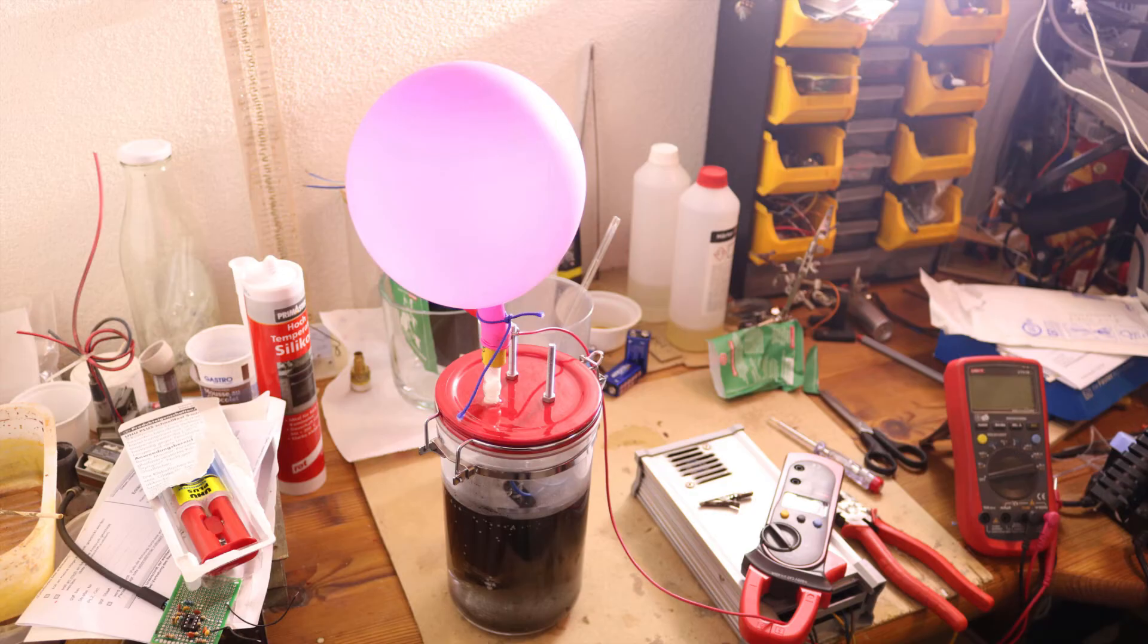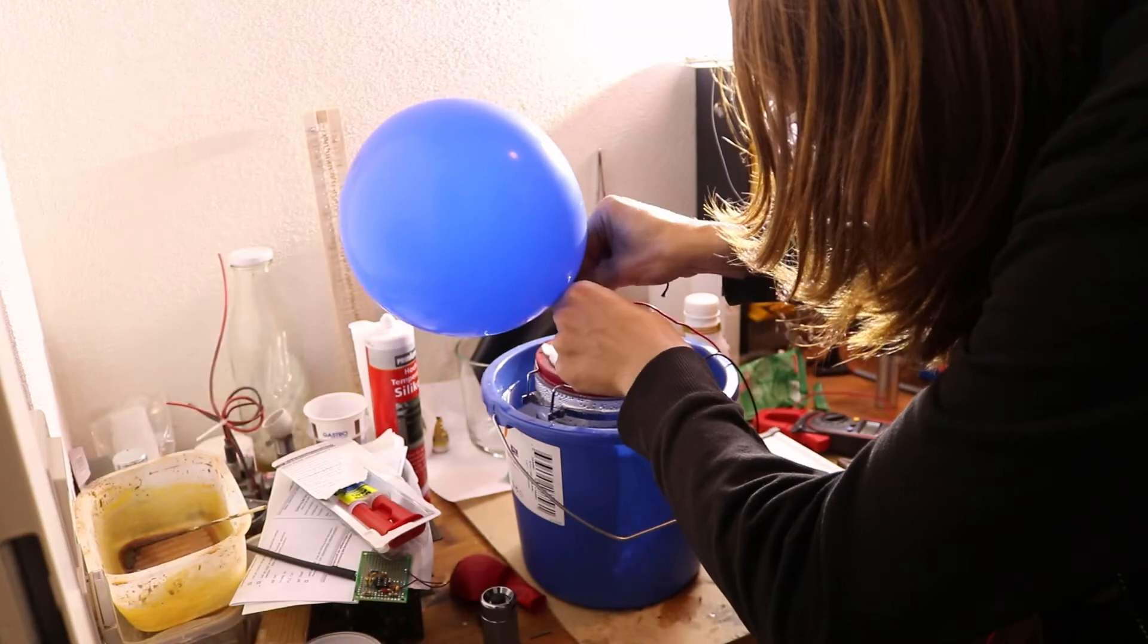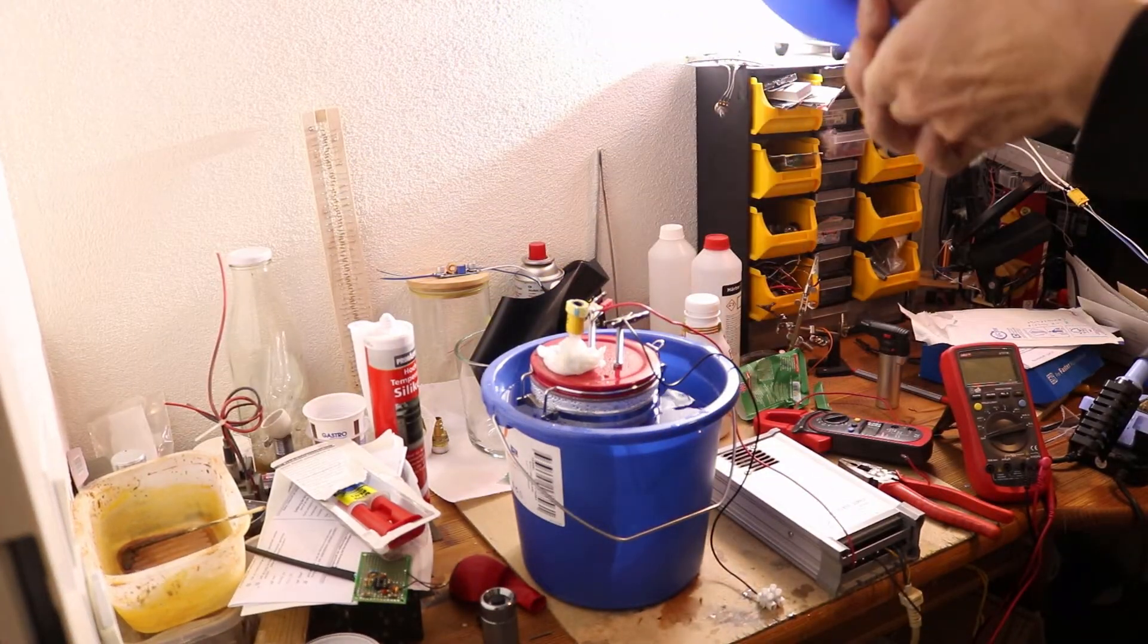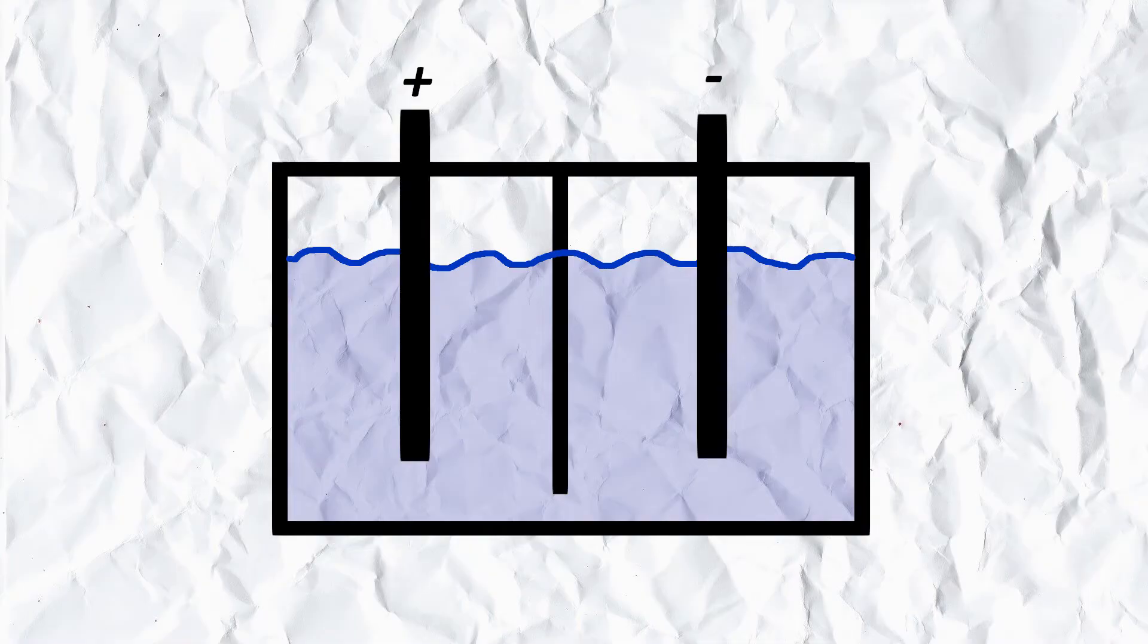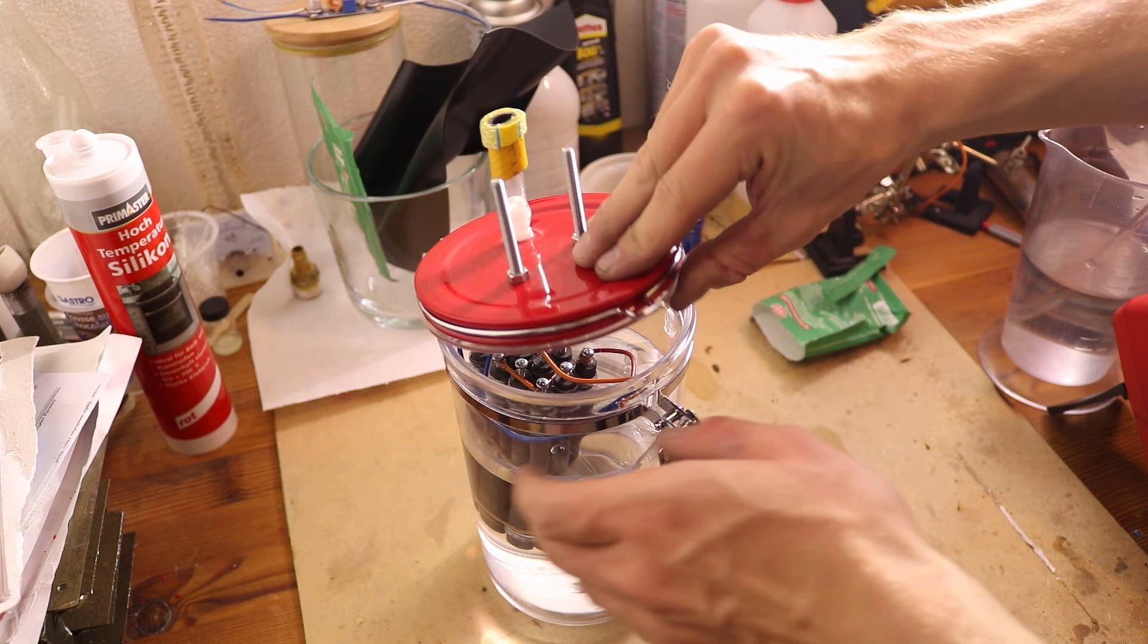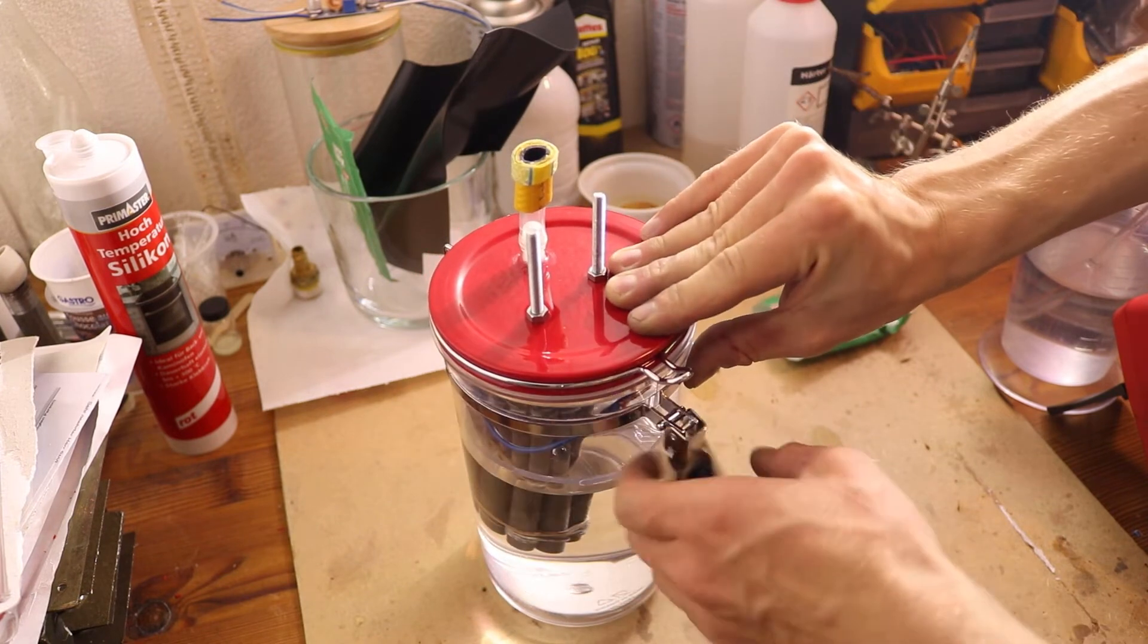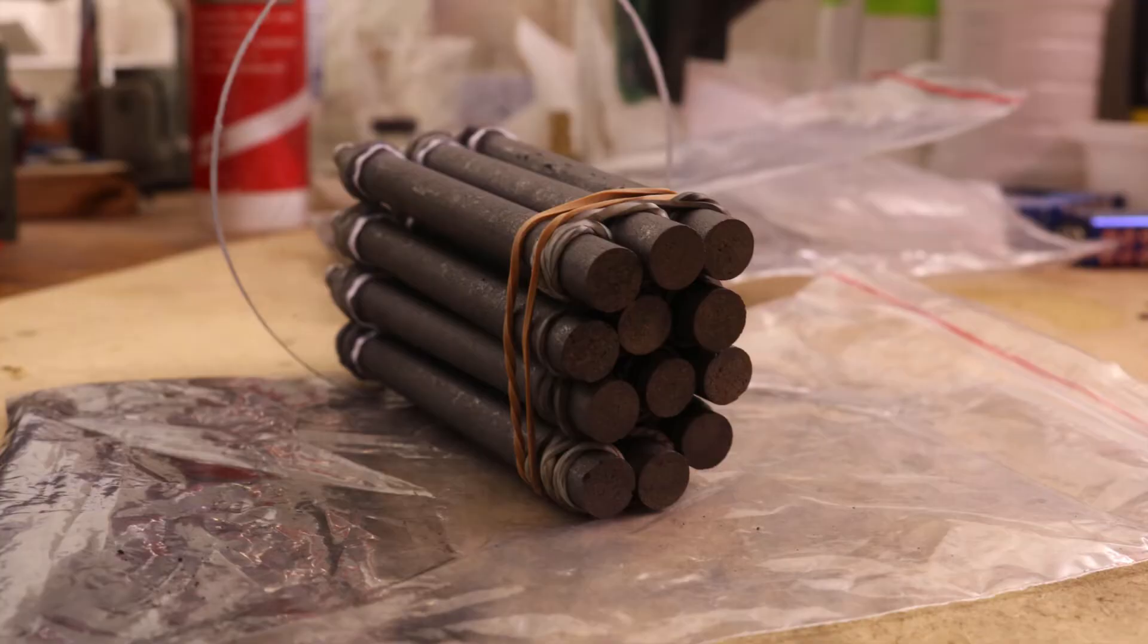In this video I will show you how I made a better version that can produce more gas. Last time I tried to separate the hydrogen and the oxygen but because it's easier I didn't do it this time, also this way I can bring the electrodes closer together to make the generator more efficient.